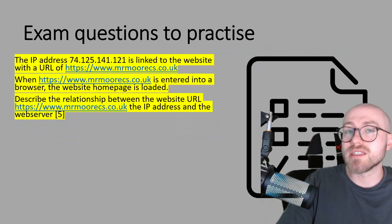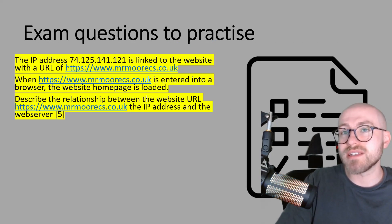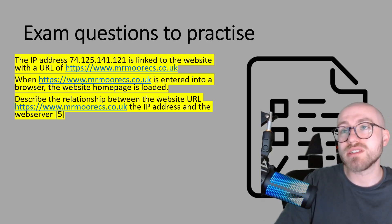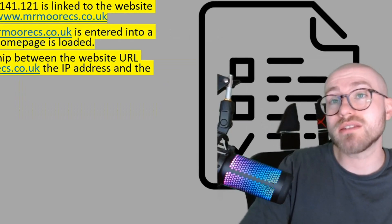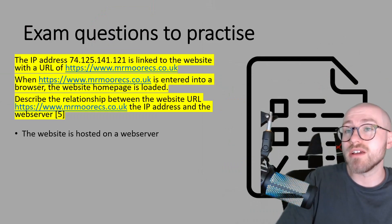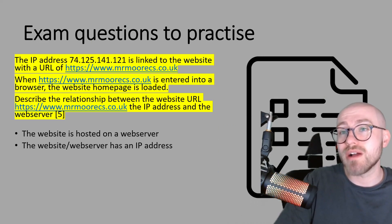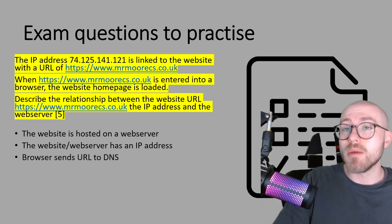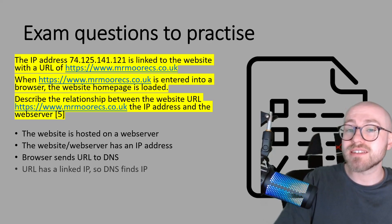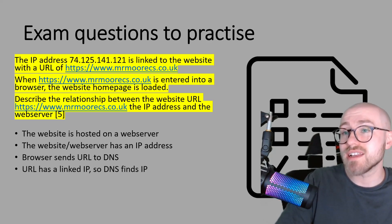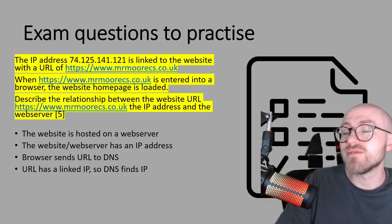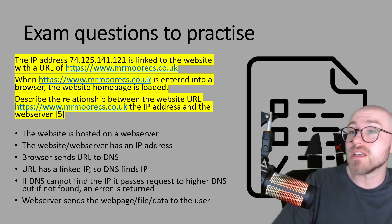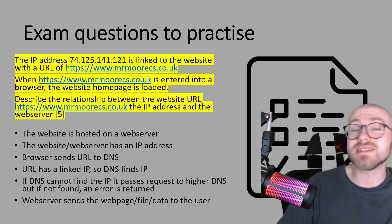You could bullet point your answer on this one, but it's nice to use parts of the scenario as well. Your answer could look like this: The website is hosted on a web server. The website and web server have an IP address. The browser sends the URL to DNS. The URL has a linked IP, so DNS finds the IP. If DNS can't find the IP, it passes it to a higher DNS, but if not found, an error is returned. Finally, the web server sends the web page and all the data to the user.